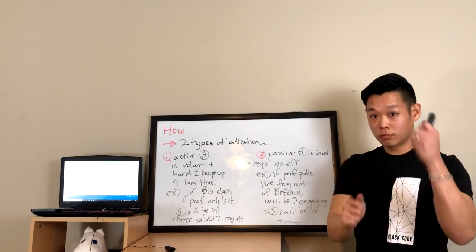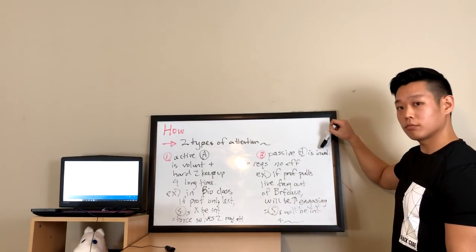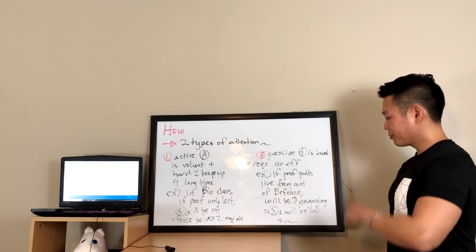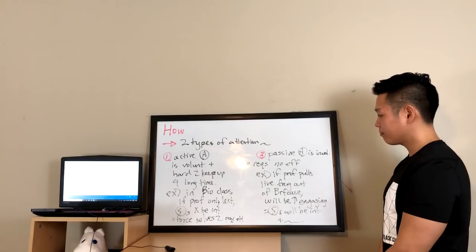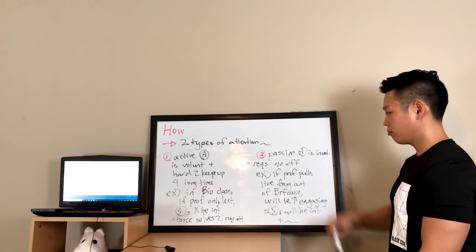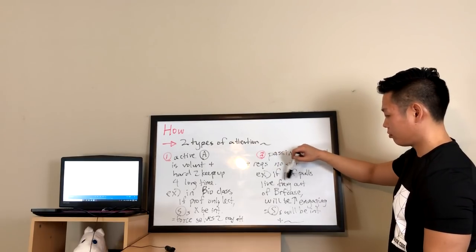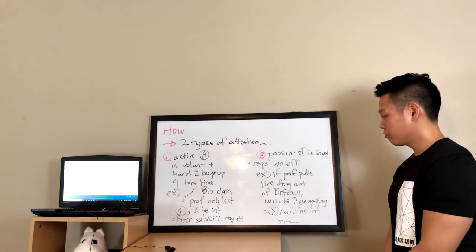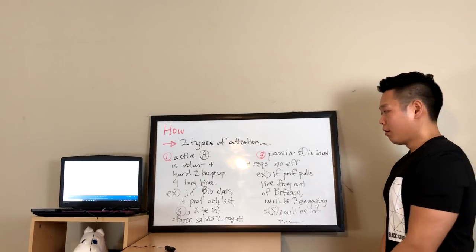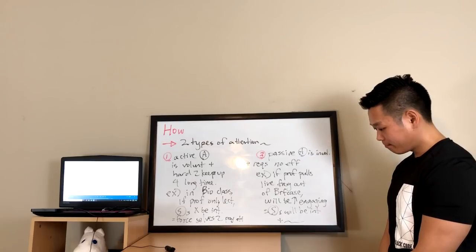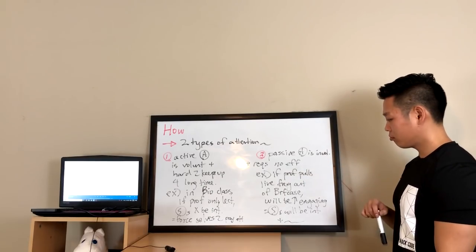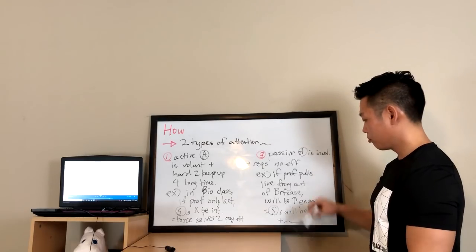The other type is passive attention, which is involuntary and requires no effort because it happens naturally. If something is really interesting, students don't have to force themselves to pay attention — they do it without thinking. Back to the biology lecture: if you pull a live frog out of your briefcase, describe it, show its long legs, and let it jump around on the desk, you've done something unexpected and engaging. You tap into their passive attention, which can last much longer than active attention — as long as the frog's still there.